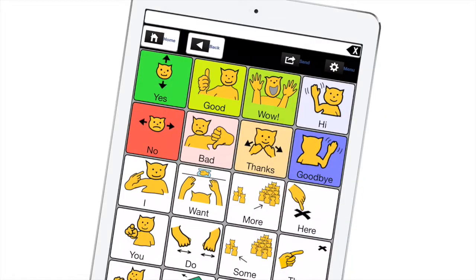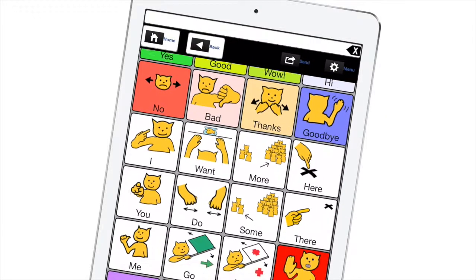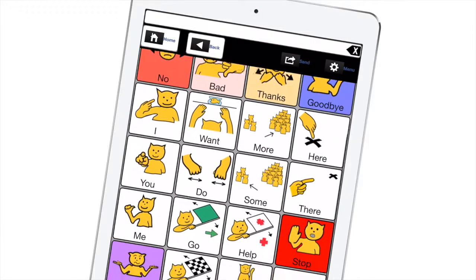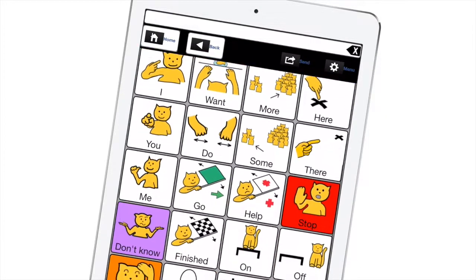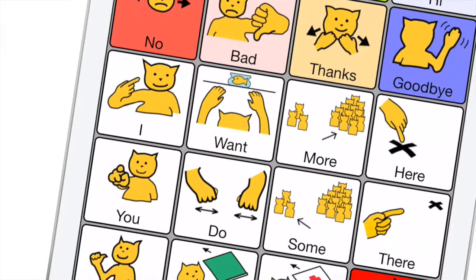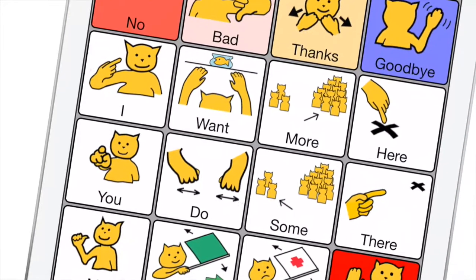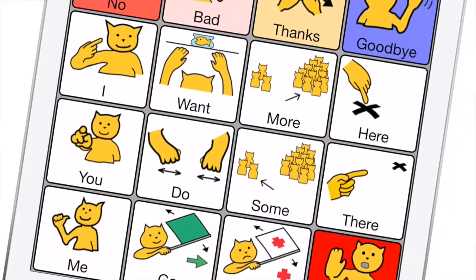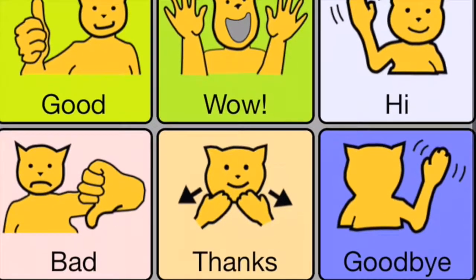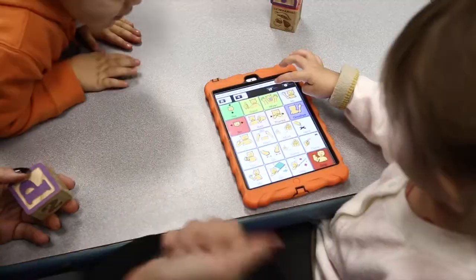The AAC app includes core vocabulary, usually with 28 of the most frequently used words, including more, go, stop, open. Emotions such as wow and thanks.